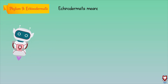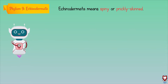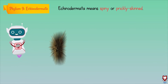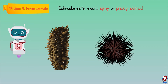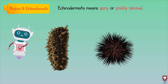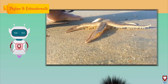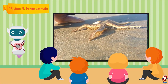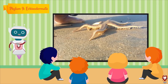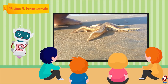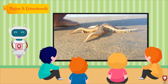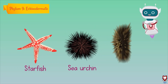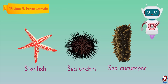Echinodermata means spiny or prickly skinned. They move very slowly with the help of their little tube feet. Animals like starfish, sea urchin, and sea cucumber come under this phylum.